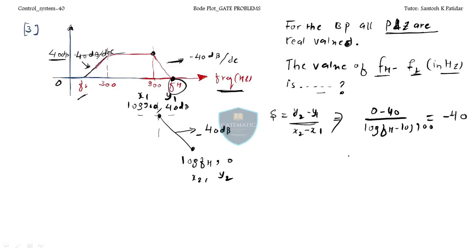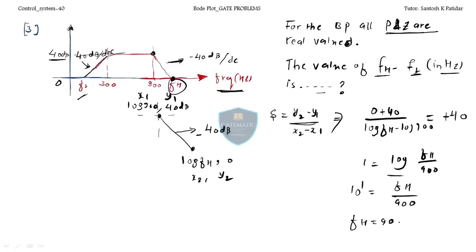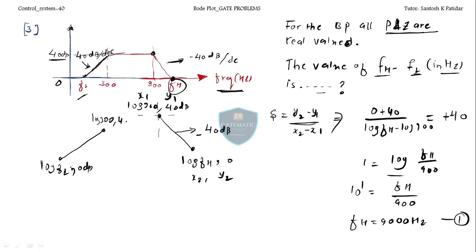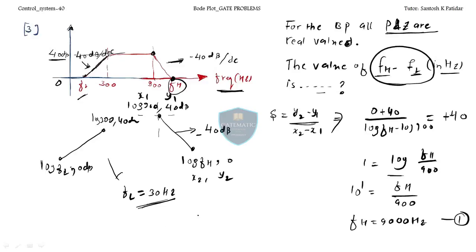Similarly, for the low-frequency line, applying the same slope calculation with reference point (log 300, 40 dB) and endpoint (log FL, 0 dB), you find FL = 30 Hz. Therefore, FH minus FL = 9000 − 30 = 8970 Hz.